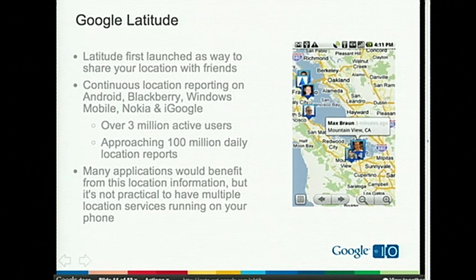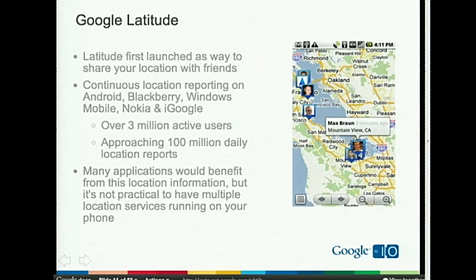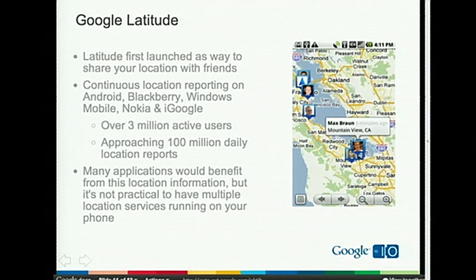It's a continuous location sharing service. We have clients on Android, Blackberry, Windows Mobile, Nokia, and iGoogle — any mobile platform we've been able to build background reporting into. It's been really successful. We have over three million active users, and those users are reporting over a hundred million daily location reports. We've been asked by users and developers to let them share location with application developers they trust who want to build on top of this information. So our solution is to offer a Google Latitude API, which we're excited to launch today.